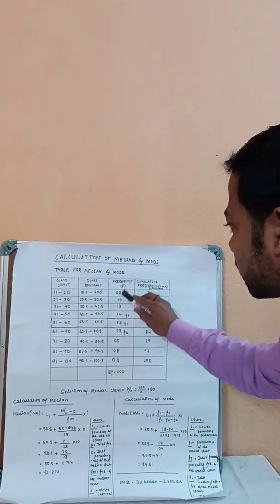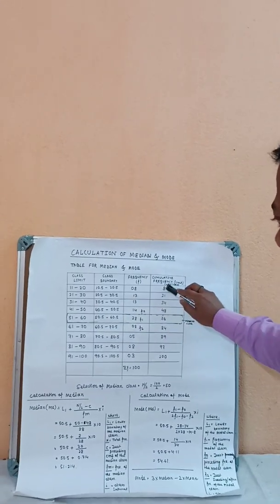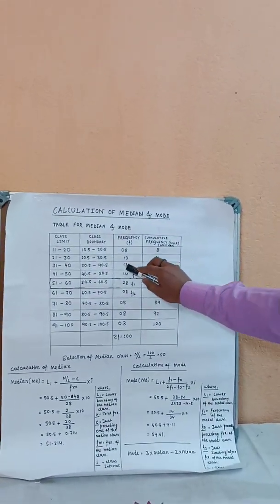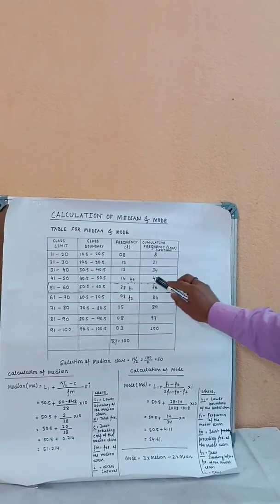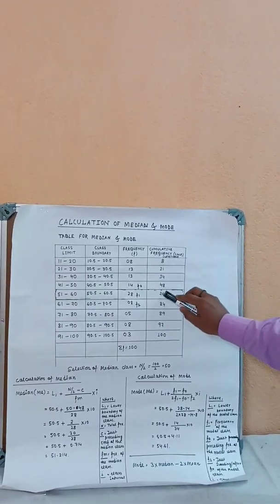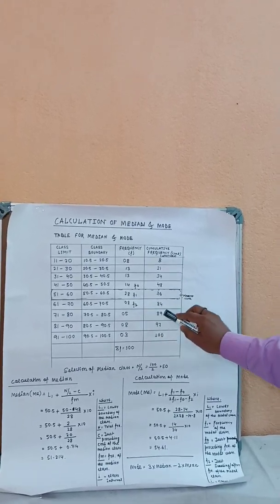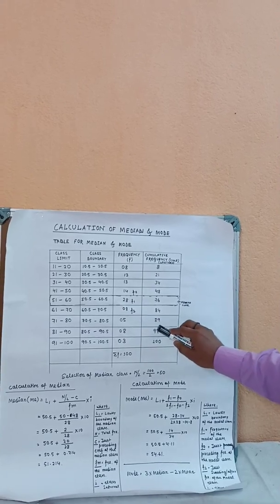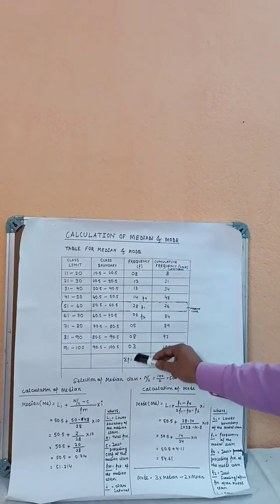The cumulative frequencies are built as follows: 8, then 8 plus 13 equals 21, 21 plus 13 equals 34, 34 plus 14 equals 48, 48 plus 28 equals 76, 76 plus 8 equals 84, 84 plus 5 equals 89, 89 plus 8 equals 97, 97 plus 3 equals 100. Therefore the total frequency is 100.